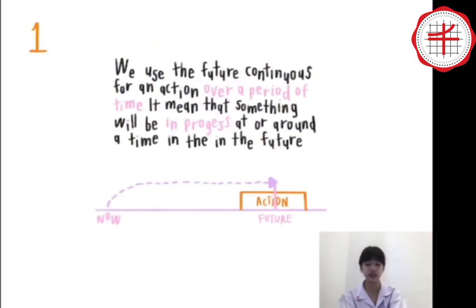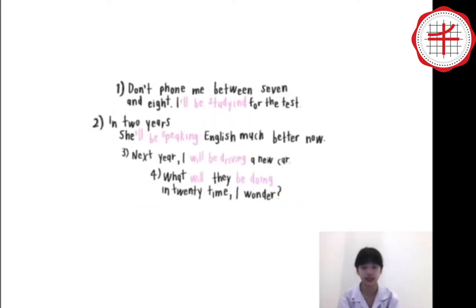First, we use the Future Continuous for an action over a period of time. It means that something will be in progress at or around a time in the future. For example, between 7 and 8 I will be studying for the test. In 2 years, she will be speaking English much better. Next year, I will be driving a new car. What will they be doing in 20 years' time, I wonder.